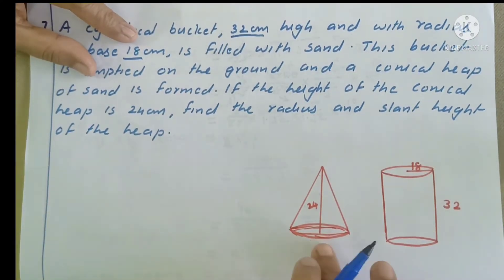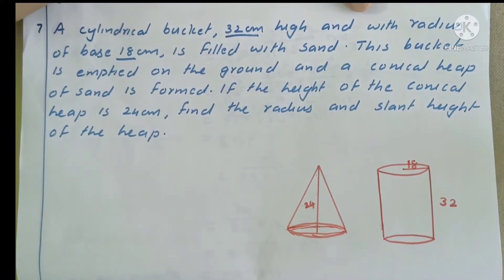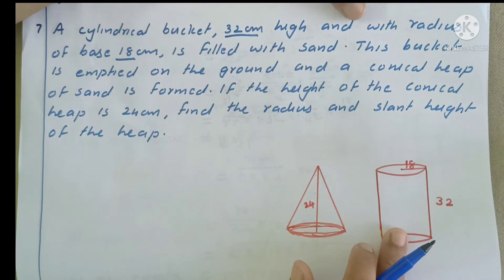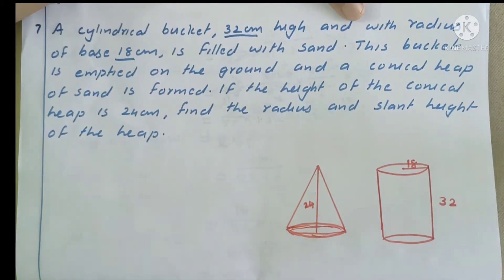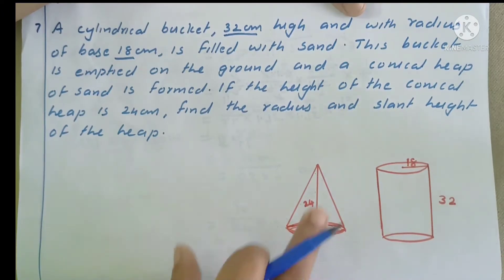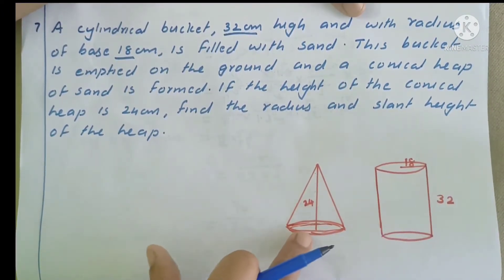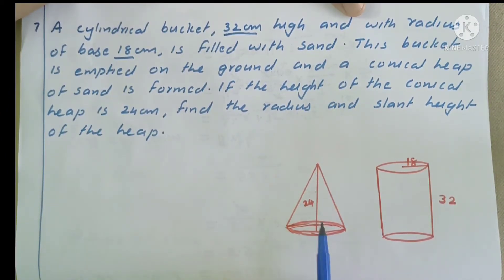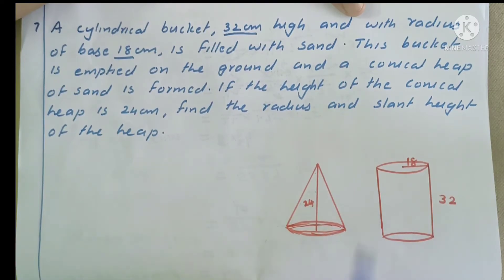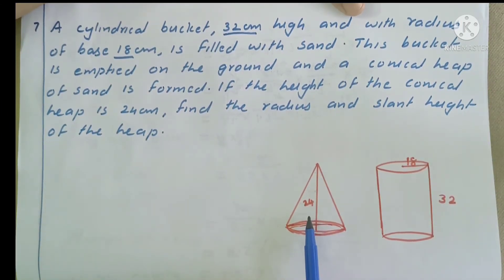The radius and slant height of the heap — this is the cone shape. The volume of the cylinder equals the volume of the conical heap. Volume of cone is 1/3 π r² h. The height of the cone gives us the radius, and then radius equals slant height using the formula.